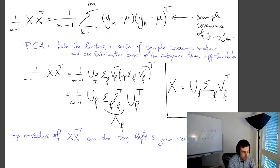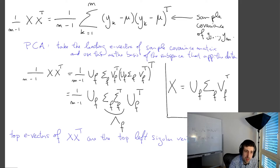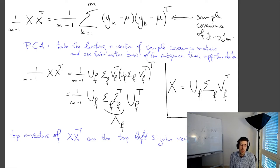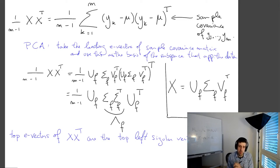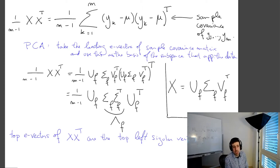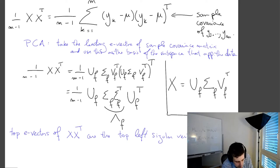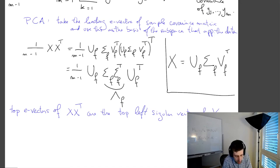I should say that even though PCA is often described through the sample covariance matrix, it's actually much faster to do it from the SVD directly. If M and P are very different sizes, computing X X^T can take quite a bit of time.